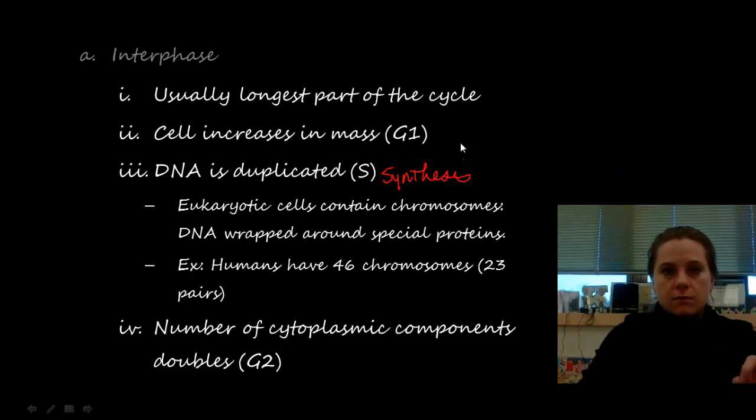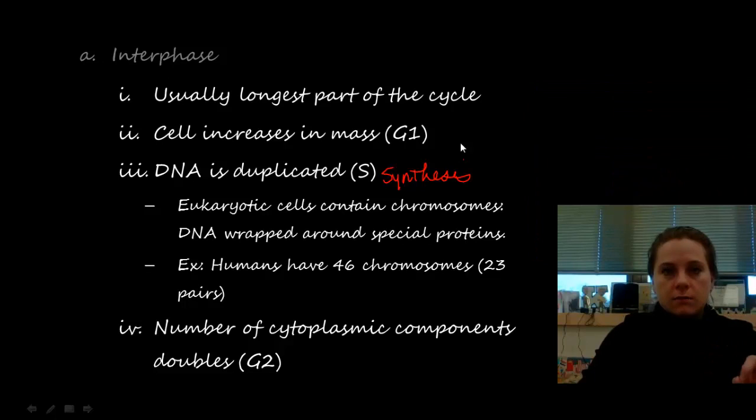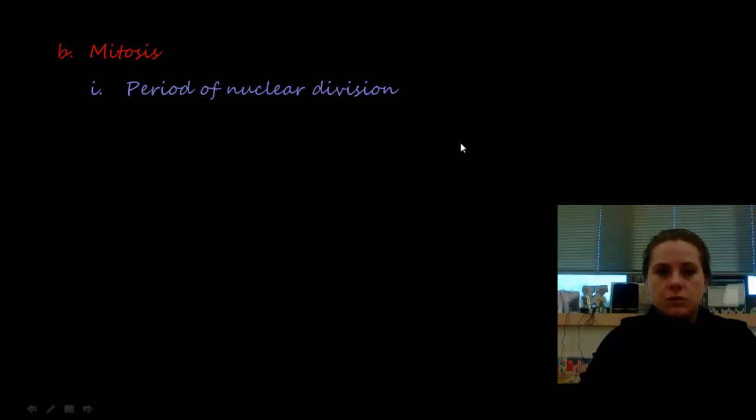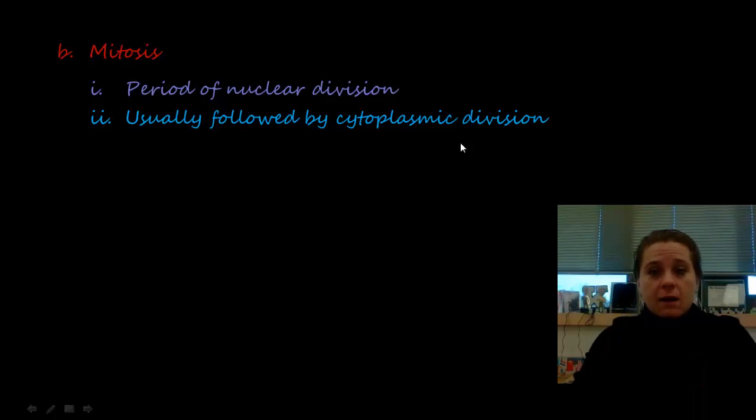Then comes the important piece: mitosis. This is where we divide the nuclear contents — the chromosomes — in a very systematic process. Once that happens, we get a division of the cytoplasm and the actual pinching in and separation of the cells.